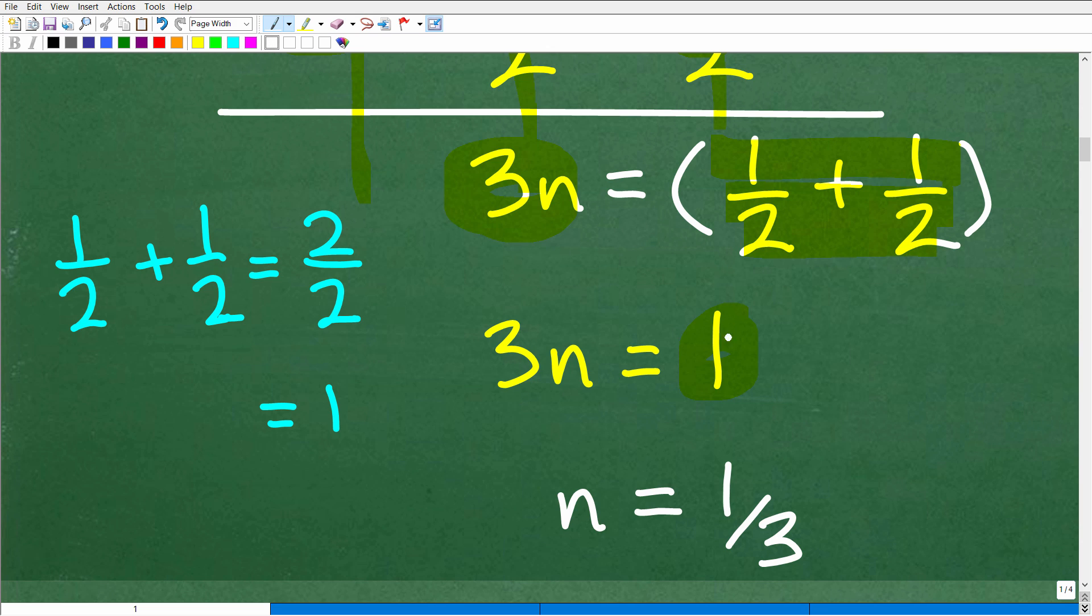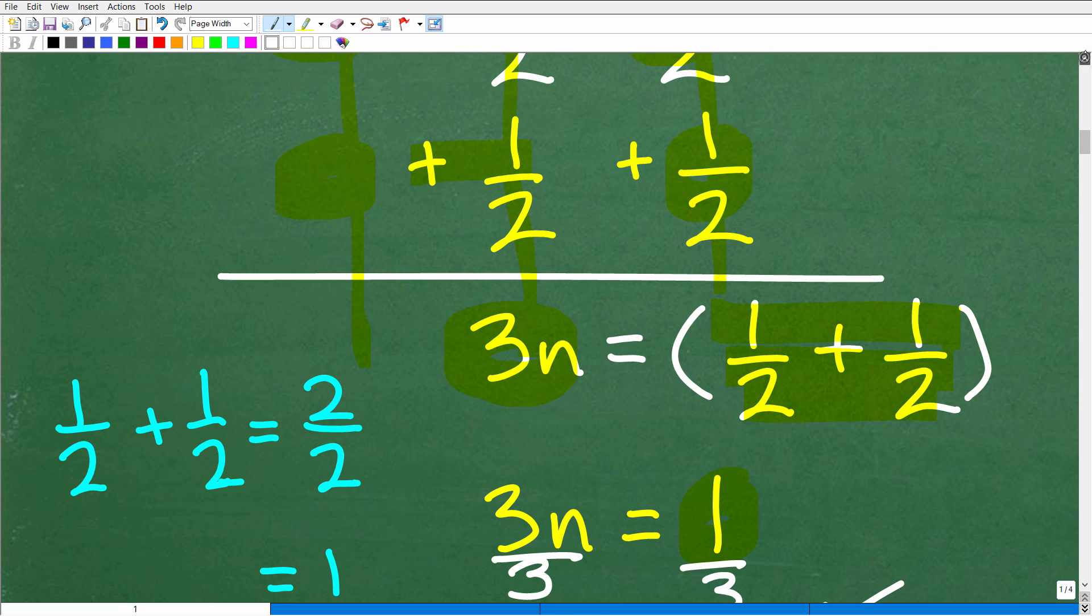All right. So here is where our equation stands. We have 3n is equal to 1. So to solve for n, all we need to do is divide both sides of the equation by 3. So we have n is equal to one-third. All right. So this required two steps.